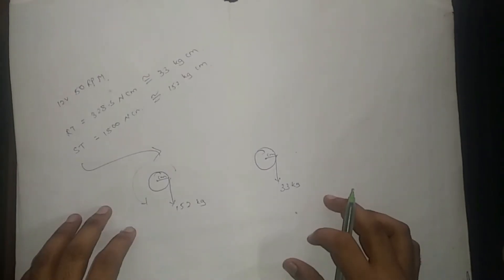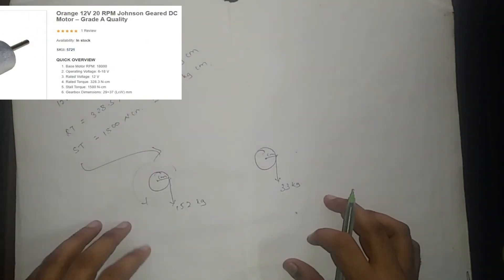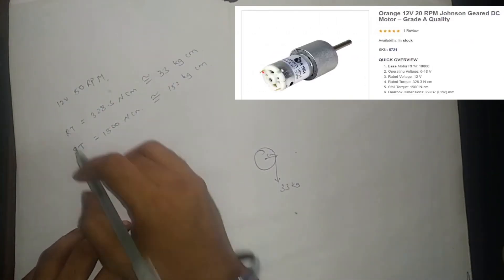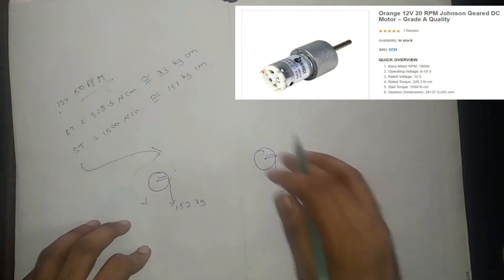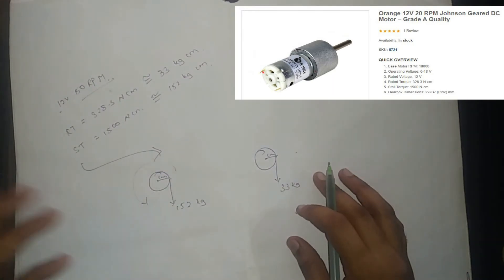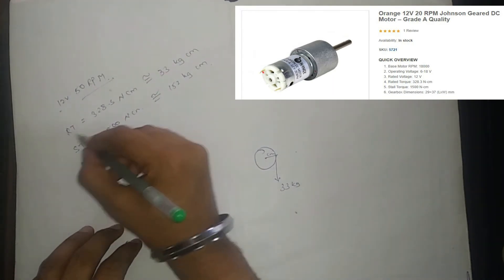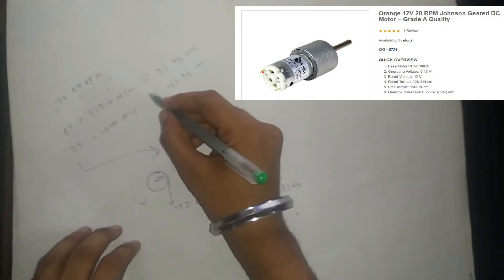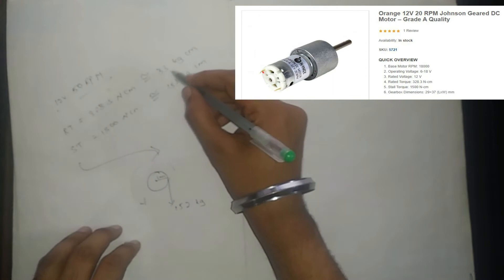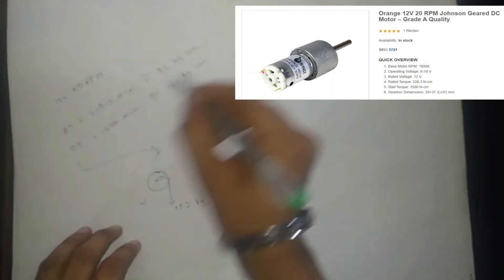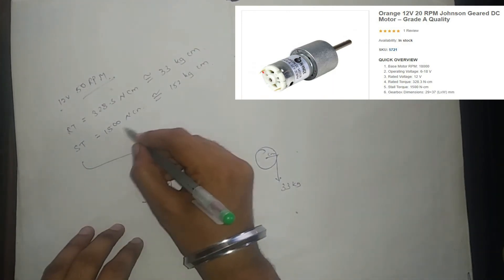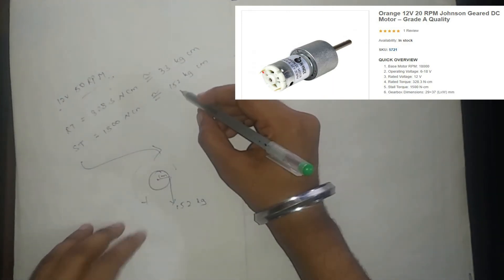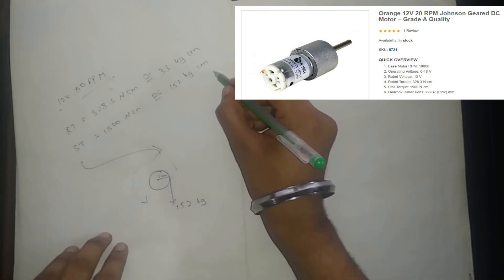Now let's consider this motor's datasheet. This is a 12V, 50RPM DC motor which has a Rated Torque of 328.3 N·cm, which is approximately 33 kg·cm, and a Stall Torque of 1500 N·cm, which is approximately 152 kg·cm.